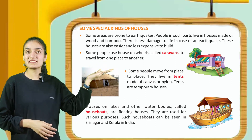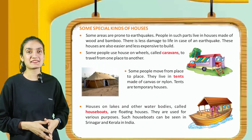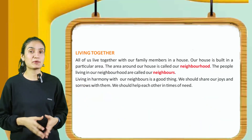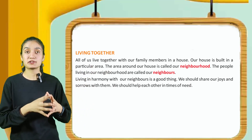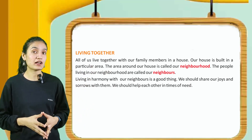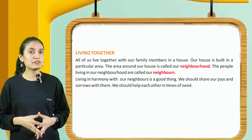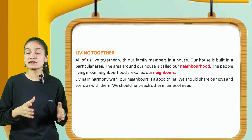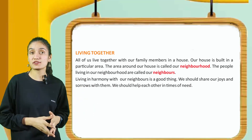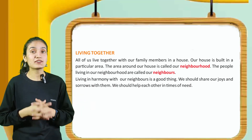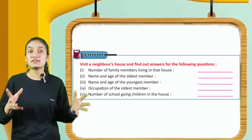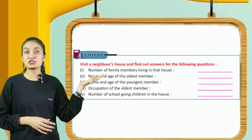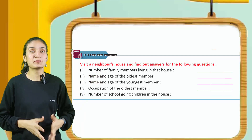So students, in this way you can see different types of houses. Next is living together: all of us live together with our family members in a house. Our house is built in a particular area. The area around our house is called our neighborhood. The people living in our neighborhood are called our neighbors. Living in harmony with our neighbors is a good thing. We should share our joys and sorrows with them. We should help each other in time of need. Activity: visit a neighbor's house and find out answers for the following questions. Here are some questions and you have to answer them accordingly.